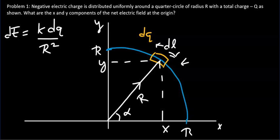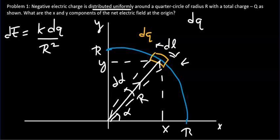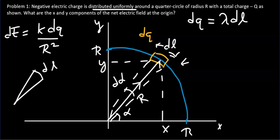The edges of the charge segment subtend a tiny angle d_alpha. We need this to write dq in terms of alpha. Since the charge is uniformly distributed, and this segment is part of a circle with radius r enclosing angle d_alpha, the length dl equals r times d_alpha.